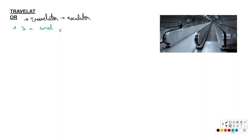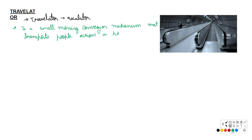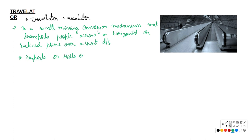Next, let's discuss the travelator. This looks almost the same as an escalator. Basically, it is a small moving conveyor mechanism that transports people across a horizontal or slightly inclined surface over a short distance. We see them in airports or large malls. They are usually straight and horizontal, or sometimes inclined about 5 to 10 degrees, but not more than that.